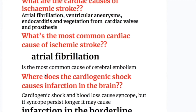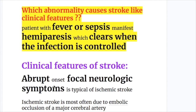What is the most common cardiac cause of ischemic stroke? Atrial fibrillation is the most common cause of cerebral embolism. Patients with fever or sepsis may manifest hemiparesis, which clears when the infection is controlled.